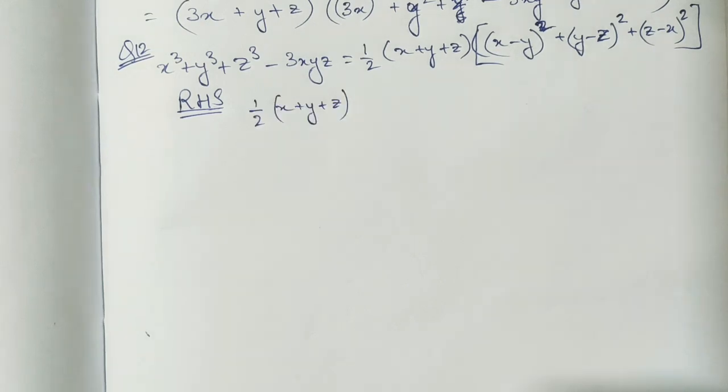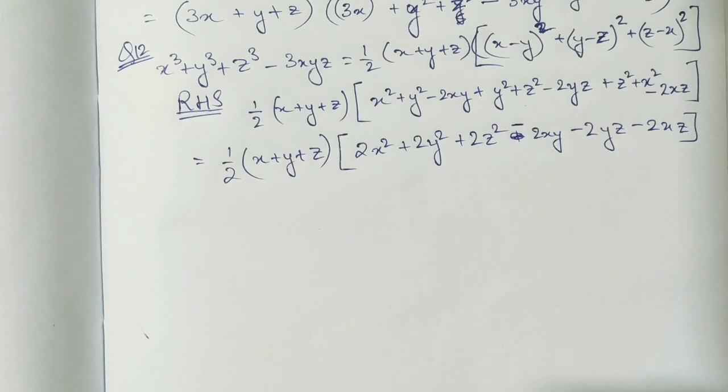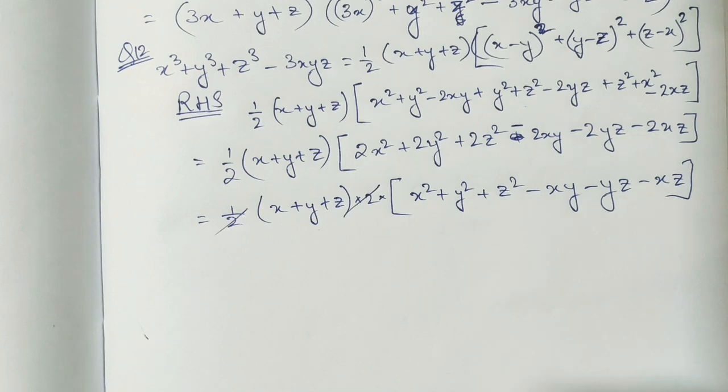You see what I am doing here. I have expanded x minus y whole square, similarly y minus z whole square. After solving the like terms we will get this. Now we will take out the two as common, now two will get cancelled.